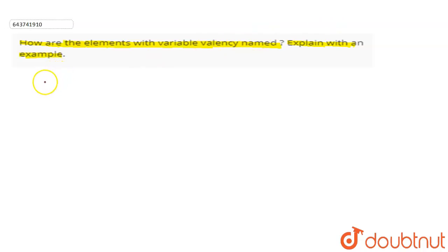The combining power or combining capacity of an atom or an element is called its valency.